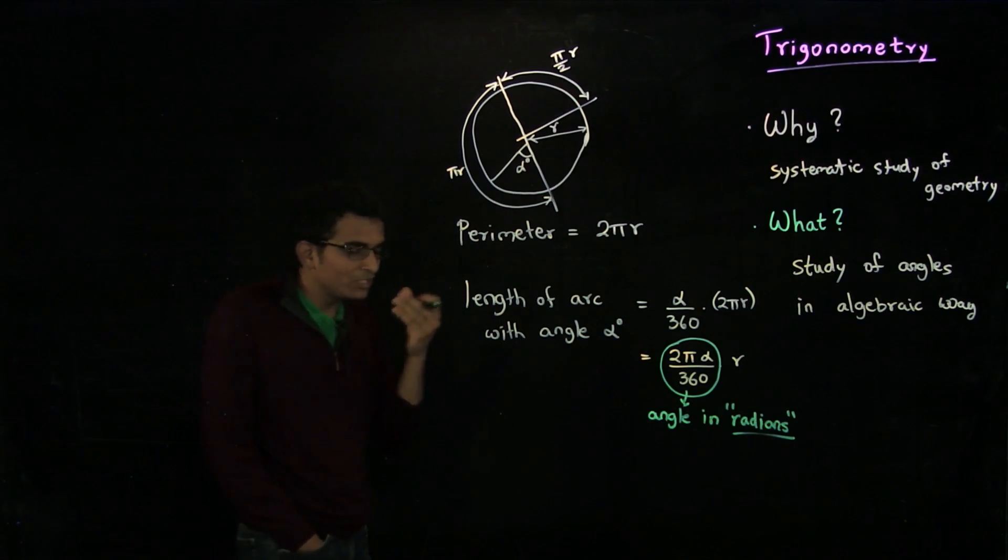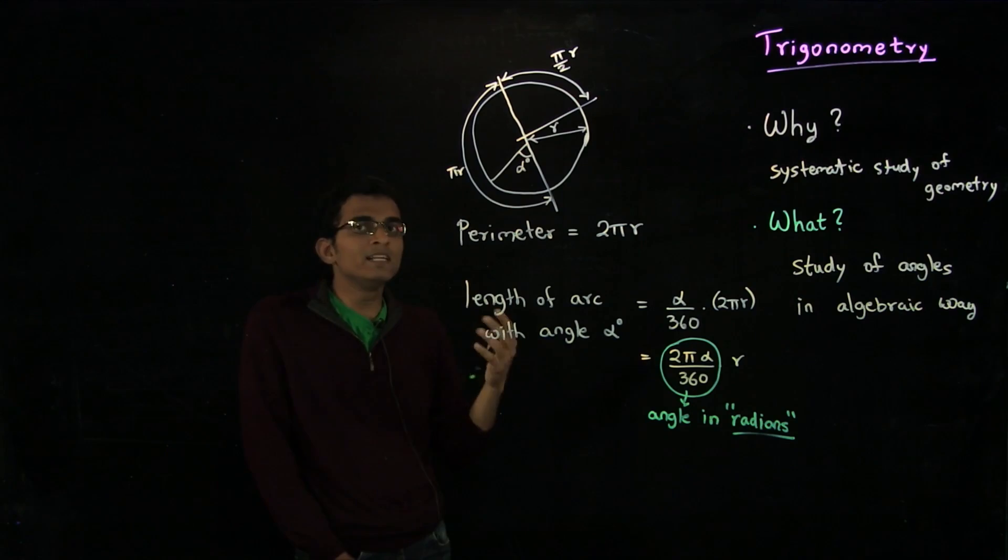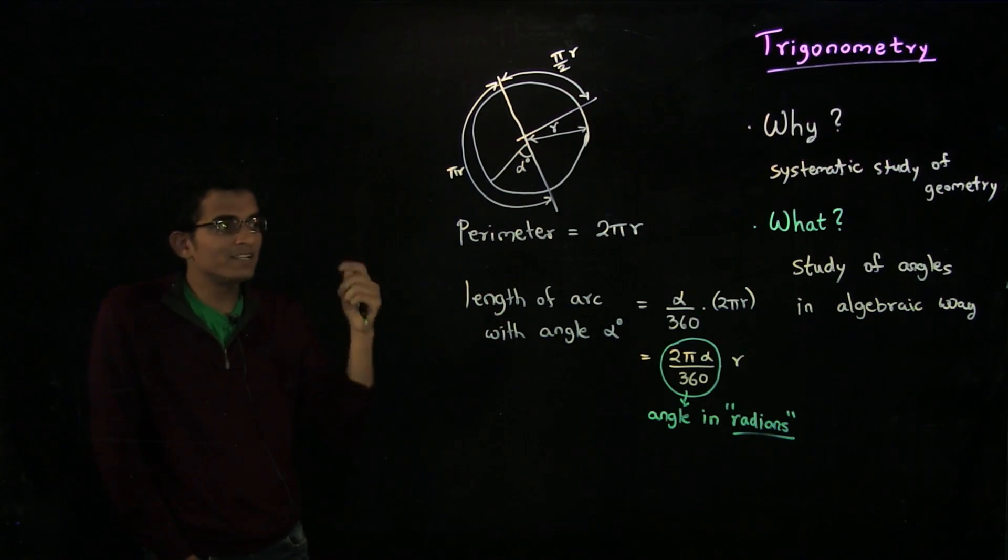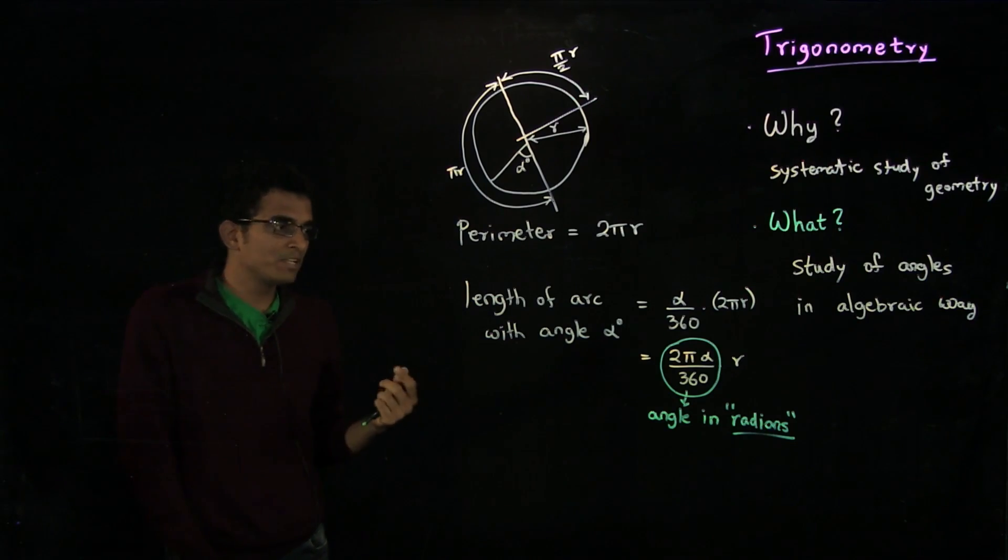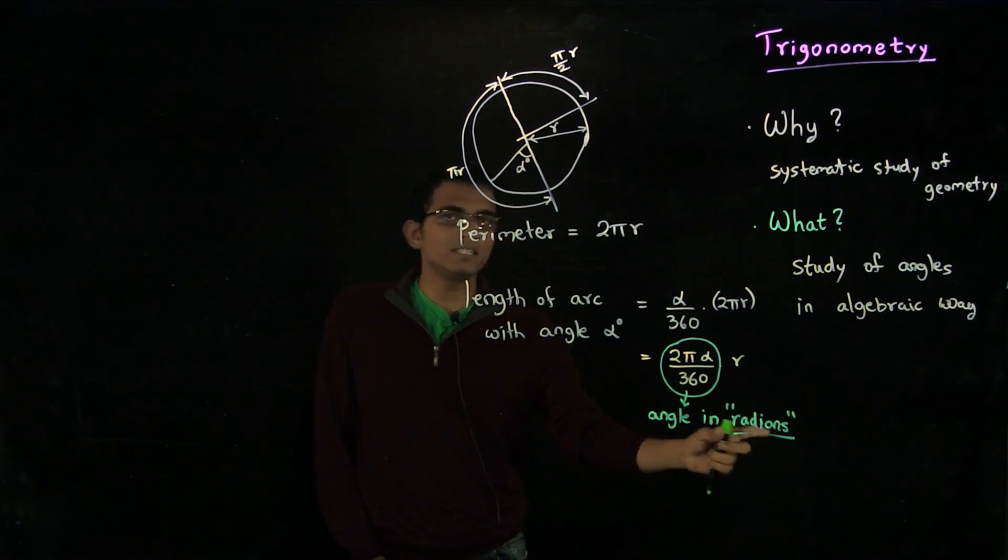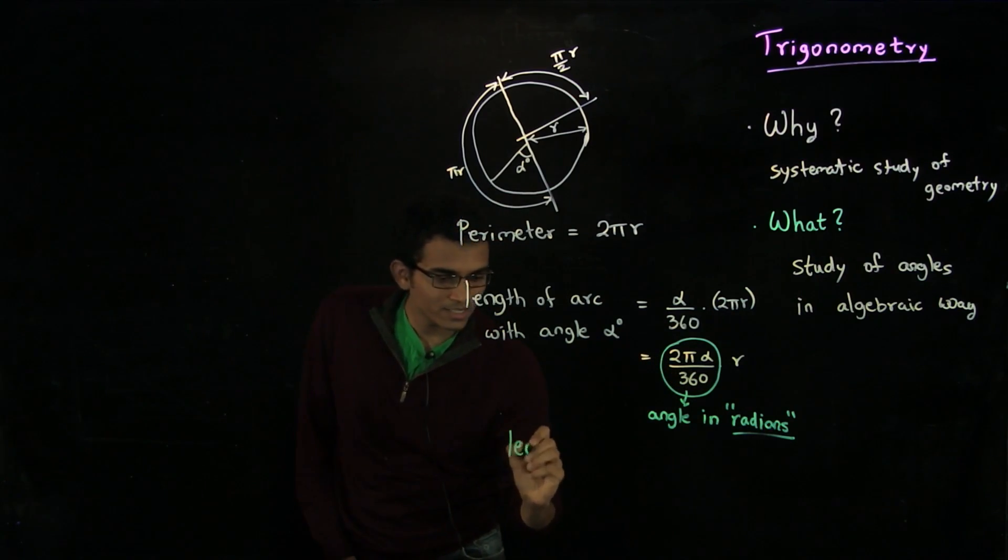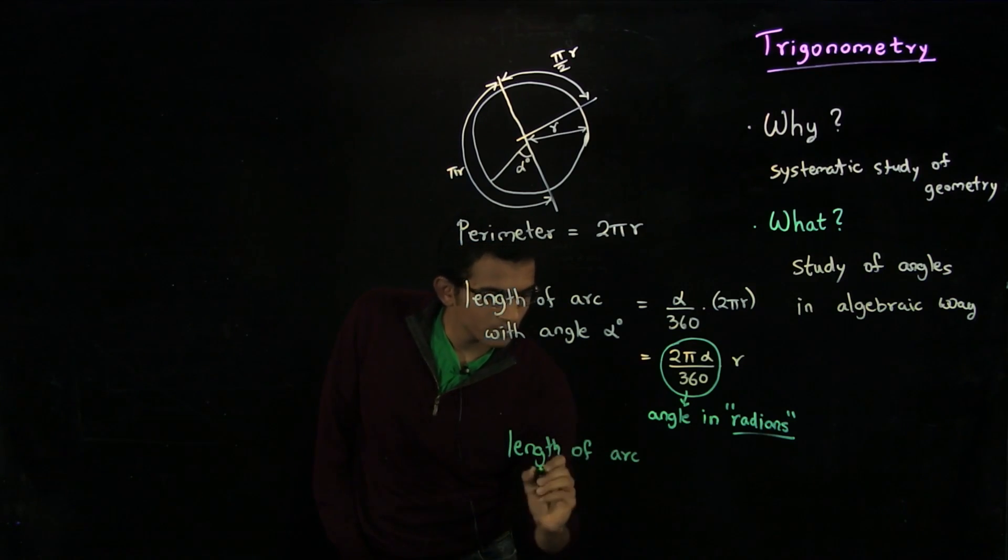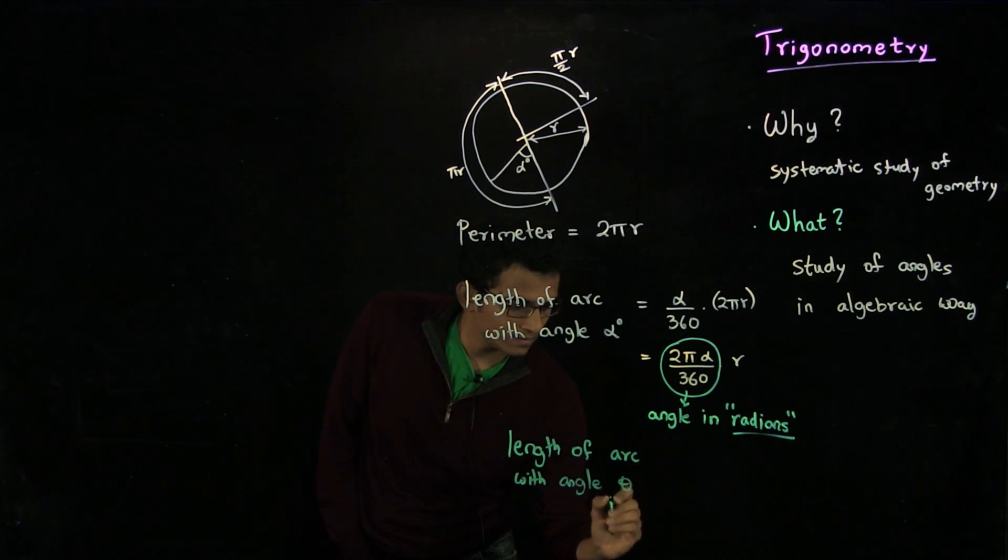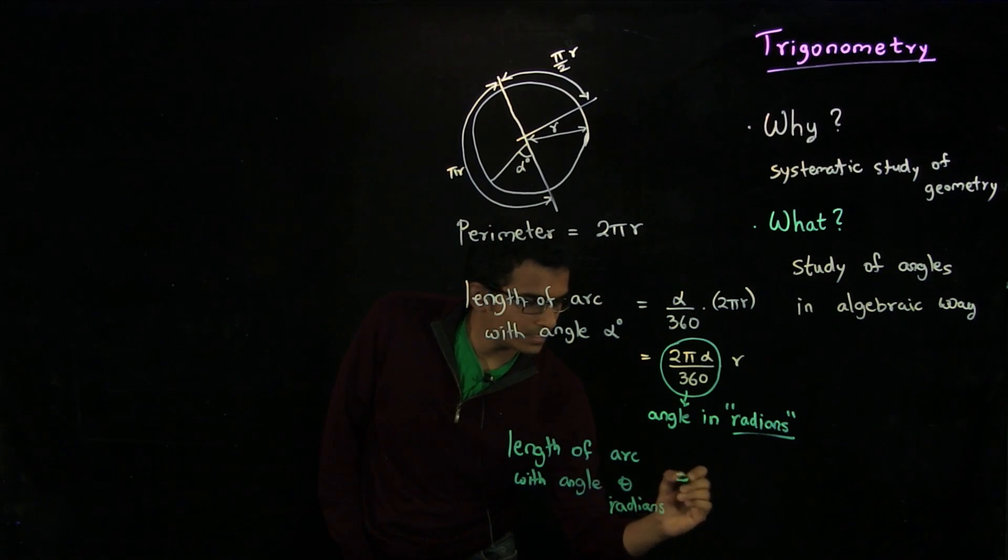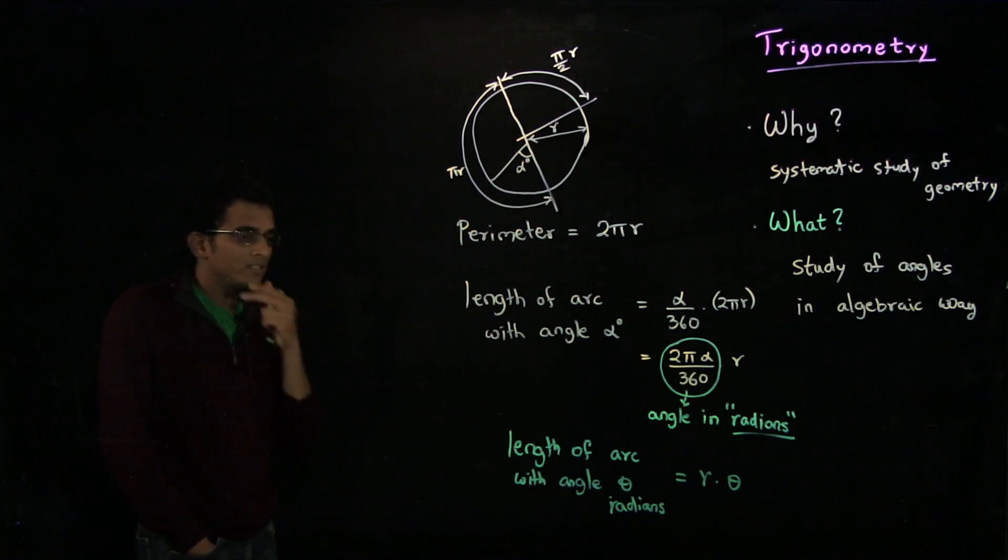My math teacher used to tell me that when you are learning a new language, like for example if I am trying to speak in English, if I want to learn it well, I should not think in a different language. Like think in Hindi and translate to English every time I am speaking. You should really start thinking in English if you want to learn English well. Similarly here, thinking in terms of radians is often the better thing to do because now I can write length of arc with angle theta in radians is just r times theta. That is why thinking in terms of radians is often the more natural way to think about angles.